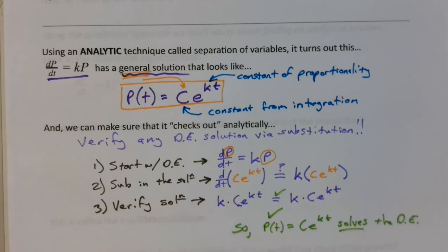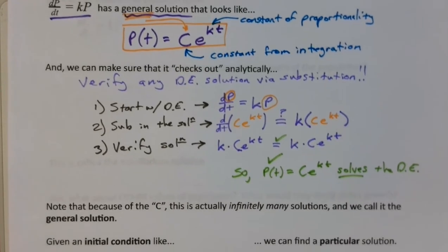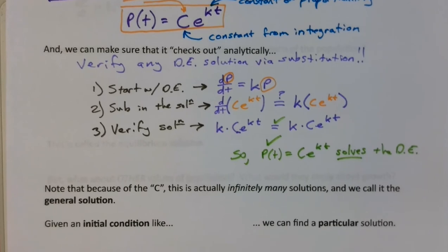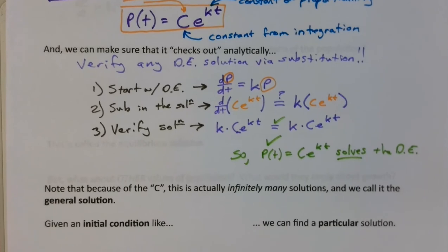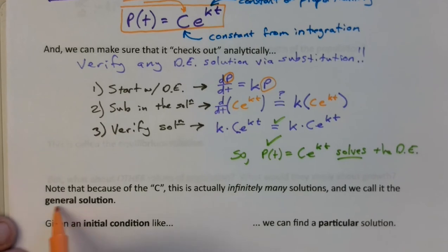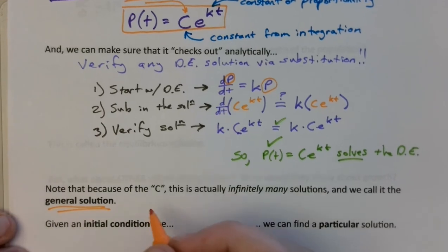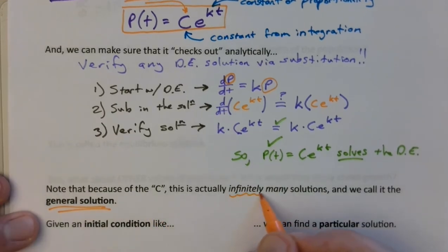And it just shows that that's a correct answer. And down at the bottom of this page, you'll note that it says, because of the C, this is actually what we call a general solution because there's actually infinitely many solutions. So a general solution, to continue with our color coding up here, our general solution is a general solution because it contains infinitely many solutions.